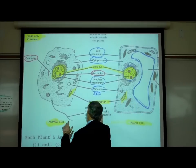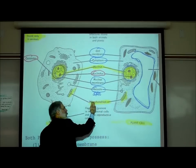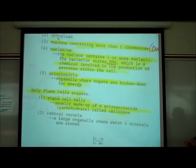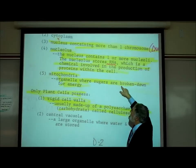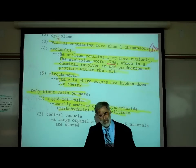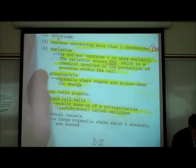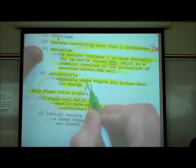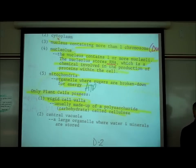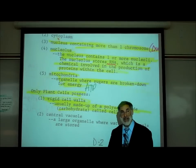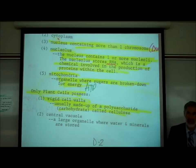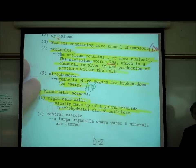One more structure that both animal and plant cells possess is called mitochondria. Mitochondria are organelles where sugars are broken down for energy, and they're commonly nicknamed the powerhouses of the cell because they produce a special chemical used for energy called ATP. That's where most of the ATP is produced in the cell. ATP is like the gasoline produced in the mitochondria.